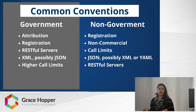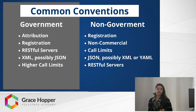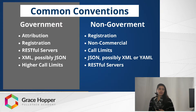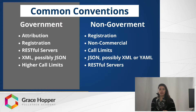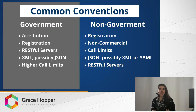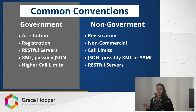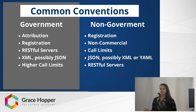For example, the NASA call limit was 1,000 calls per hour, whereas the ProPublica Congress API I used had 5,000 a day. Non-government sources — most of them said it was for non-commercial use only, and if you did want to use it for a commercial project, they wanted you to contact them and possibly pay a fee. You usually get XML and sometimes JSON from government sources, whereas non-government sources are usually always JSON, possibly JSON and XML or YAML, which is a subset of JSON. I saw RESTful servers on both sides.